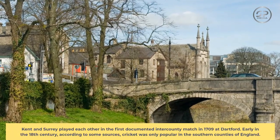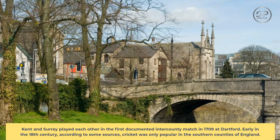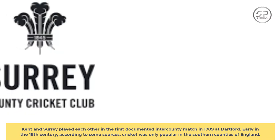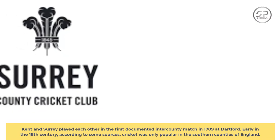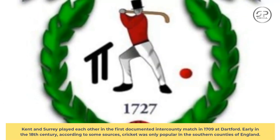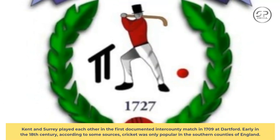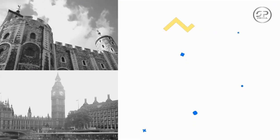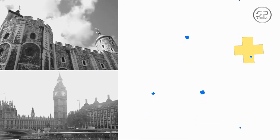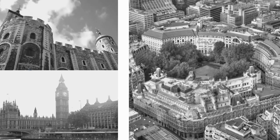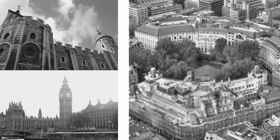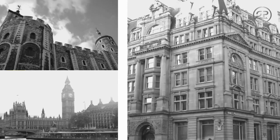Kent and Surrey played each other in the first documented inter-county match in 1709 at Dartford. Early in the 18th century, according to some sources, cricket was only popular in the southern counties of England. However, as time went on it gained popularity and eventually made its way to London, particularly to the Artillery Ground in Finsbury, where a famous match between Kent and All England took place in 1744.